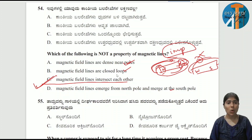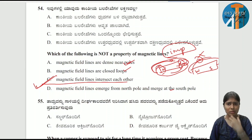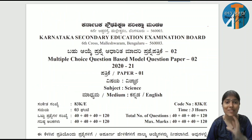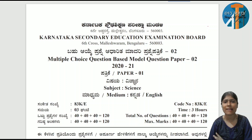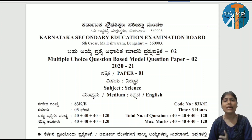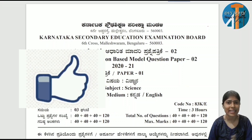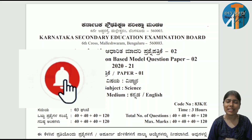That covers 14 physics questions from the model paper set 2, with different questions covering maximum topics. For physics paper set 2, the key answers have been discussed. For chemistry and biology, please refer to the SOS — Study of Science — channel. Thank you.